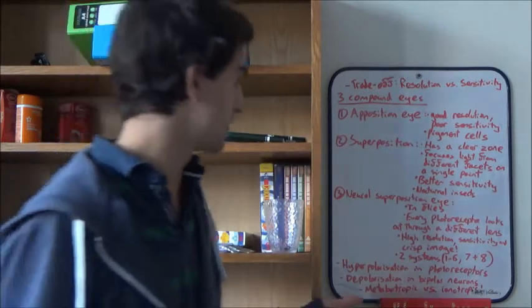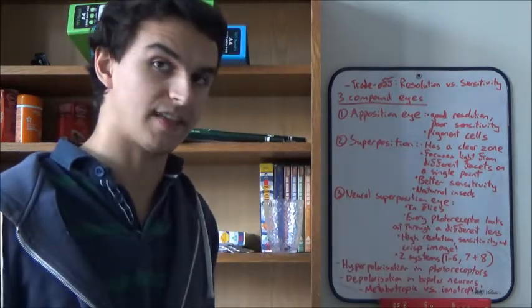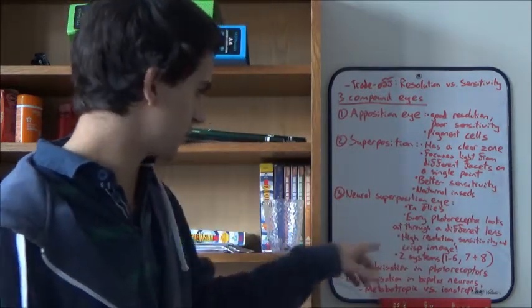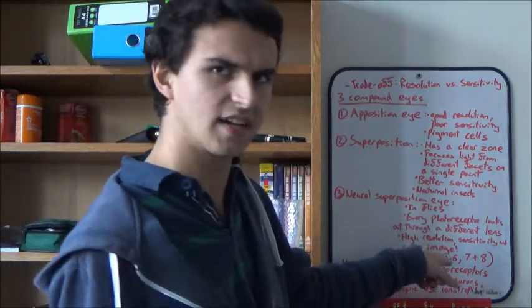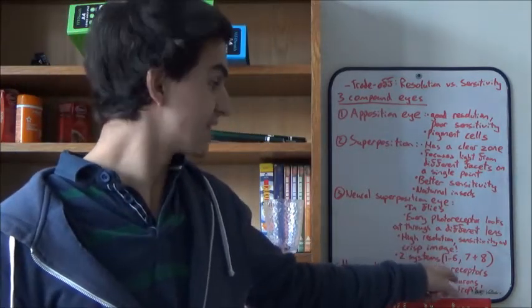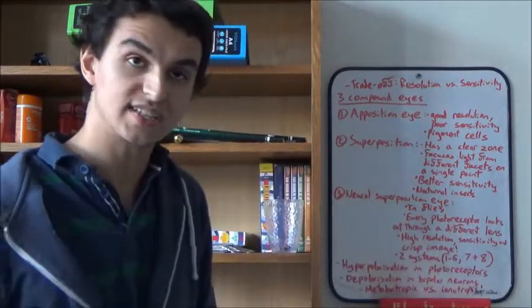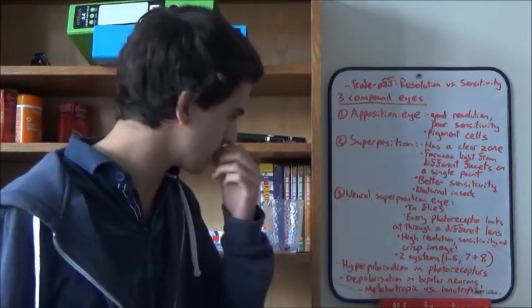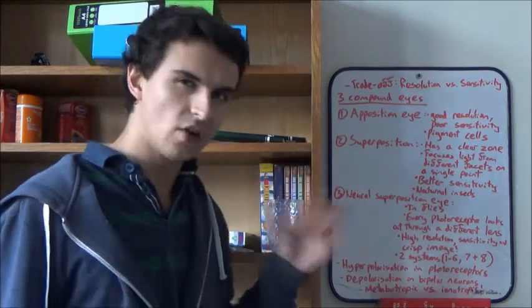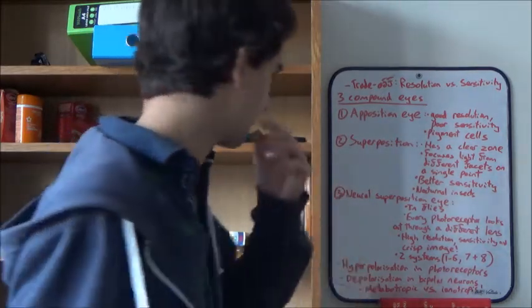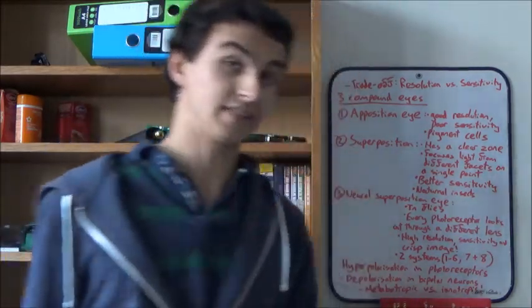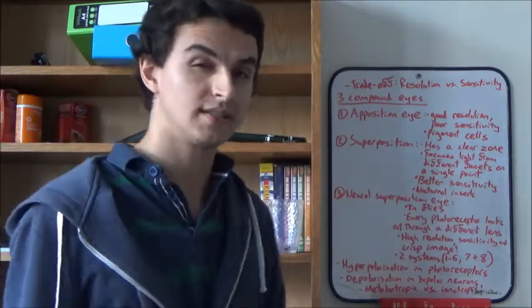And this is due to no optical interference because you've got the pigment cells there. And there are two different types. There's one to six which is to detect low intensity light, and seven plus eight which is high intensity. Okay don't worry too much about that. And the only animals that these have been observed in so far are in flies. So they're thought to be pretty unique to Diptera.